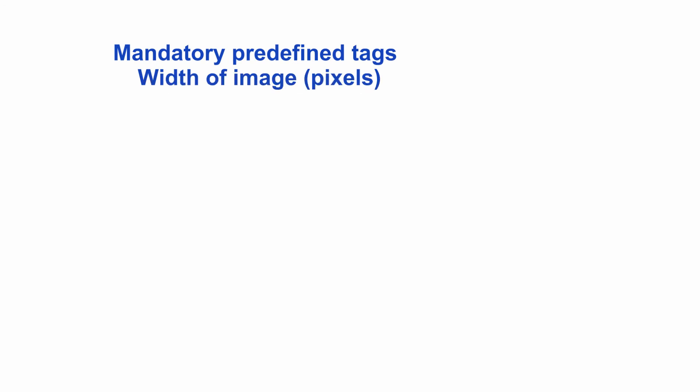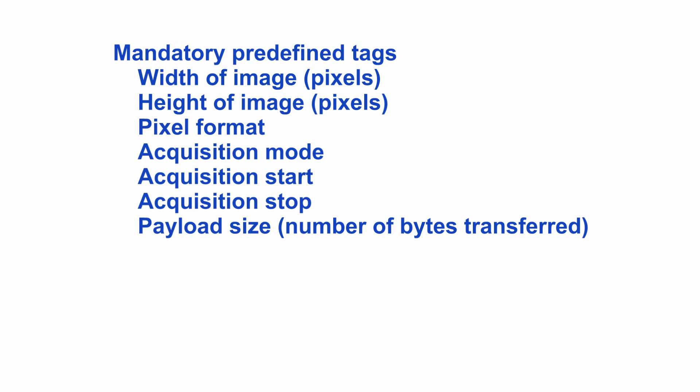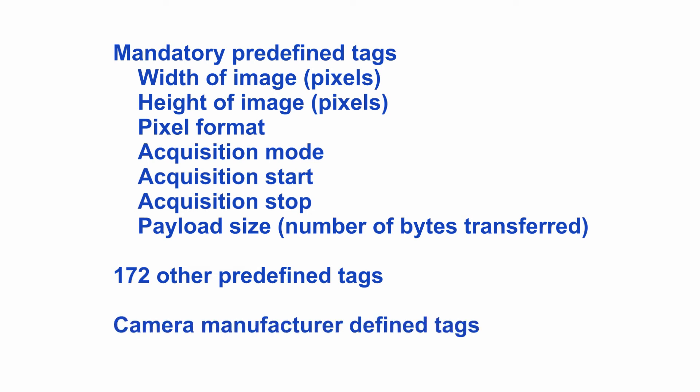The GenICam standard has seven mandatory tags and 180 predefined tags. The camera description file in all GenICam compliant cameras must have all seven mandatory tags. The camera only needs to have the remainder of the 180 tags that apply to the specific camera and its features. It is also possible for the camera manufacturer to add custom tags as they introduce new features. However, standard software packages may not recognize these special tags without some supplementary programming.